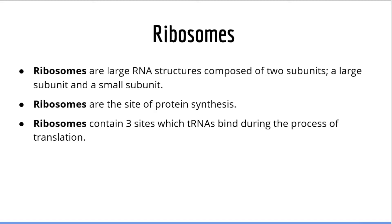Next, let's talk about ribosomes. Ribosomes are large RNA molecules composed of two subunits. Ribosomes are made by RNA polymerase type 1 in eukaryotic cells. Both prokaryotic and eukaryotic ribosomes are composed of a large subunit and a small subunit. Ribosomes are the site of protein synthesis and contain three sites where tRNAs can bind during the process of translation.